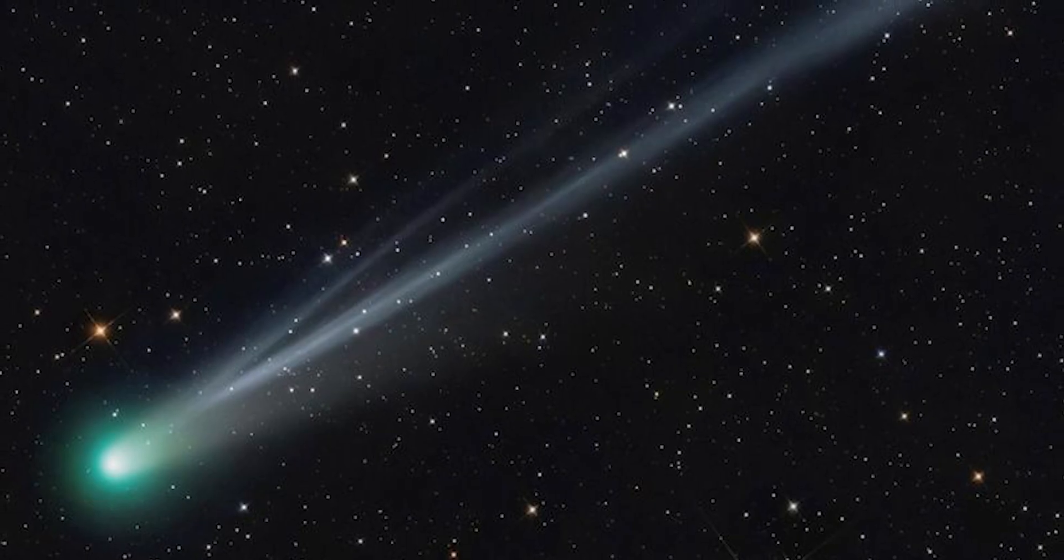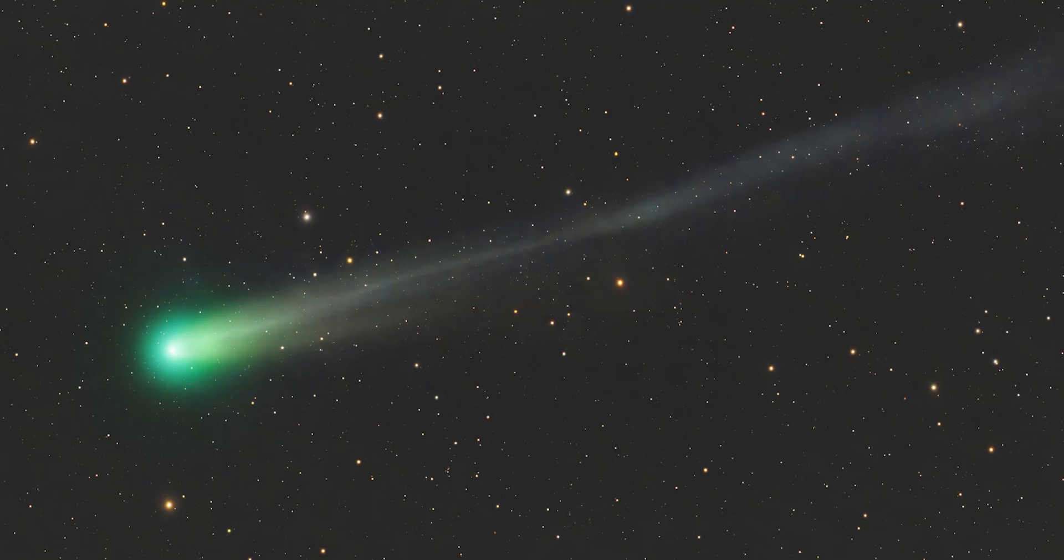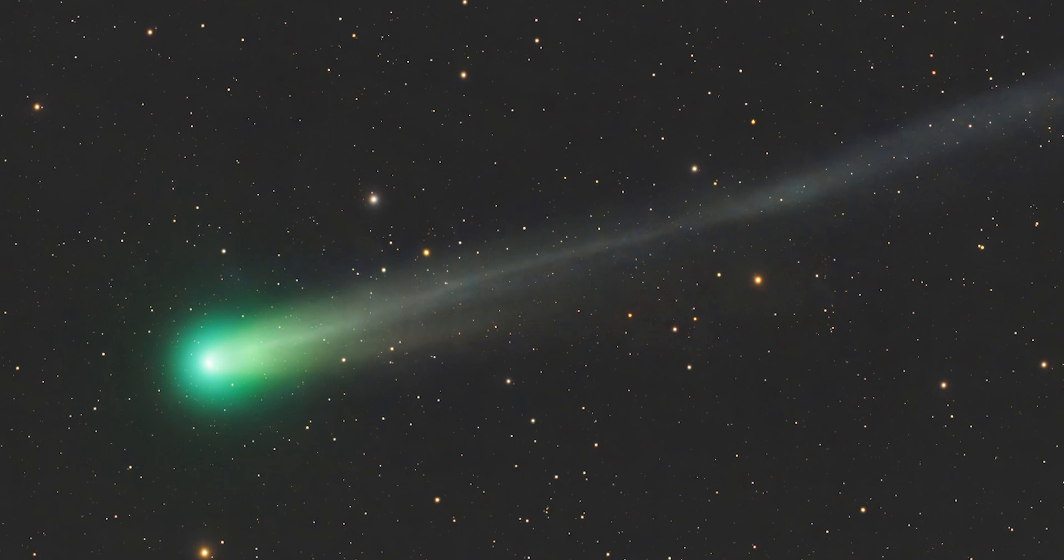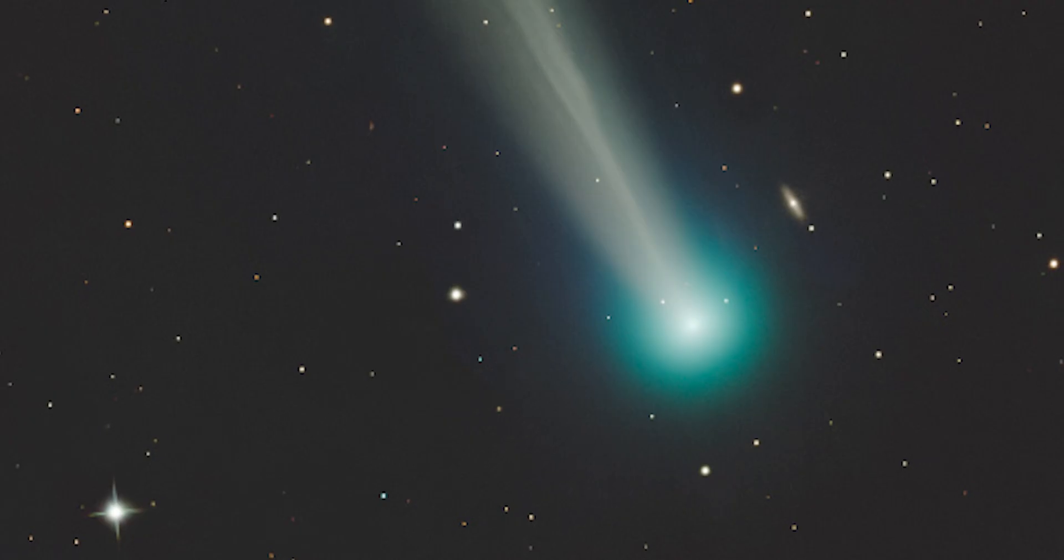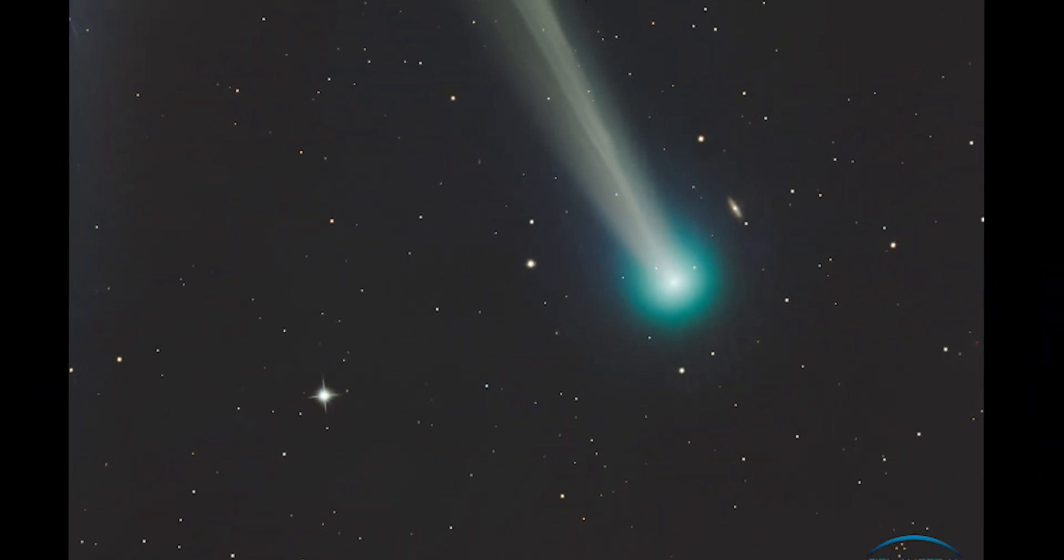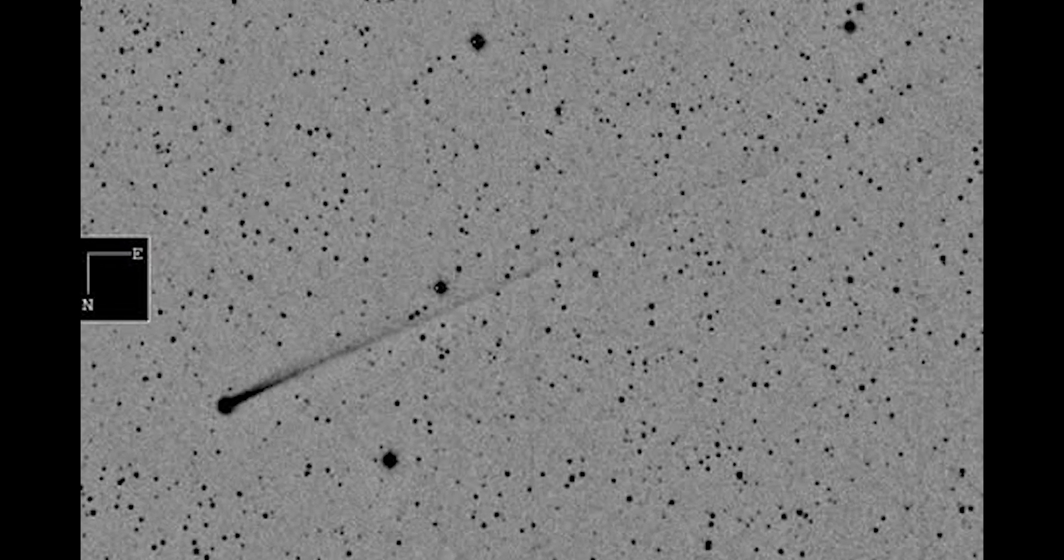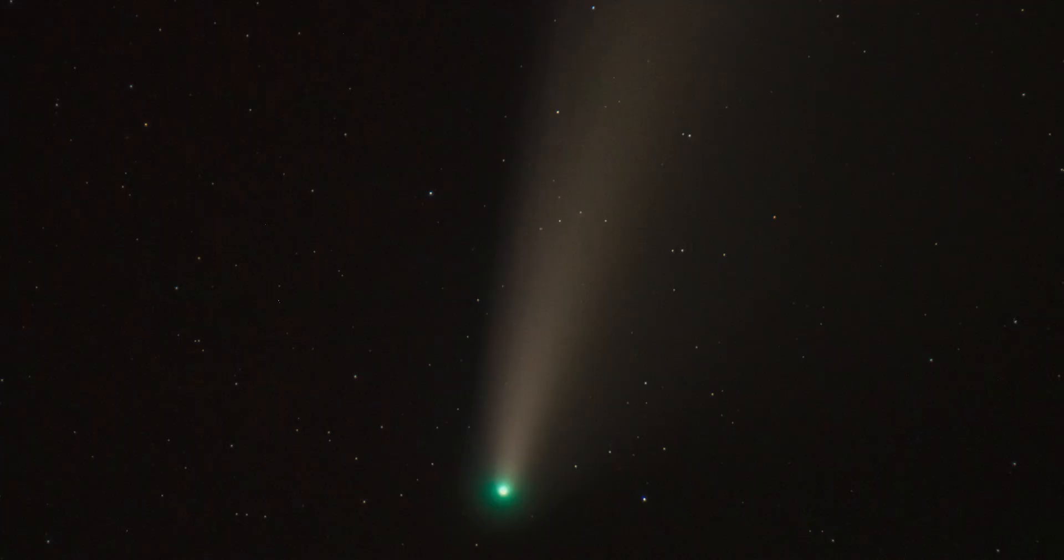For seasoned comet watchers, it was both familiar and uncanny. The color, yes, comets often glow green when their gases are excited by sunlight. But the rhythm of the brightening, the stepwise jumps, the irregular surges, defied every model. Each time Swan's light curve began to settle, another pulse would lift it again, as if the comet itself were breathing. Telescopes caught the first hints of jets, narrow columns of gas and dust shooting from beneath the surface. Their direction shifted hour by hour, tracing arcs across the coma, evidence of a tumbling or unevenly spinning nucleus.